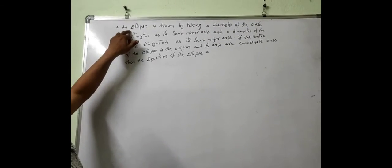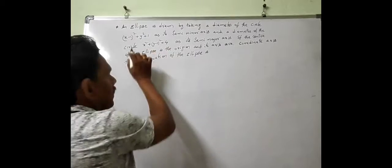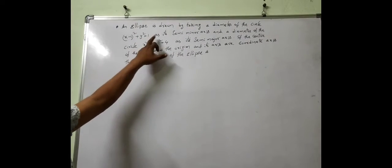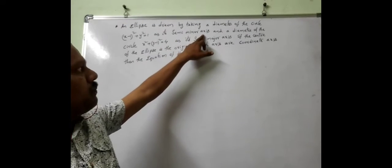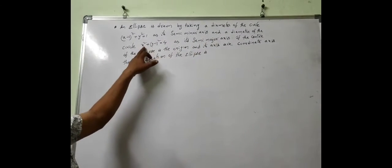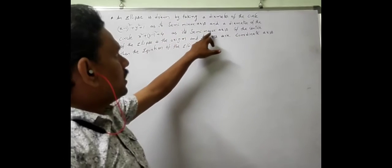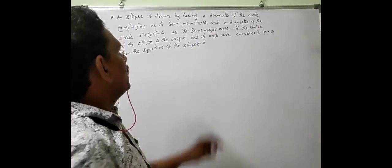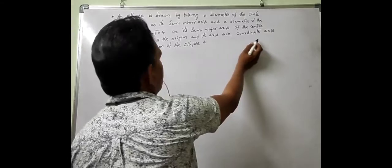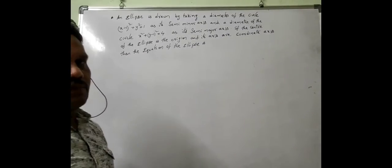Another question is: an ellipse drawn by taking a diameter of the circle x minus 1 whole square plus y square is equal to 1 has its semi-minor axis, and a diameter of the circle x square plus y minus 1 whole square is equal to 4 has its semi-major axis. If the center of the ellipse is the origin and its axes are the coordinate axes, then the equation of the ellipse is to be found.